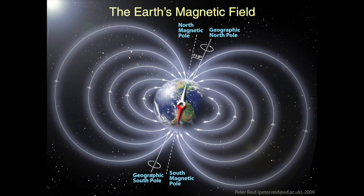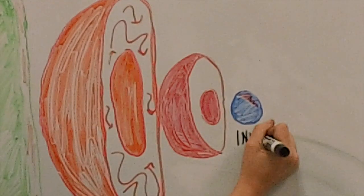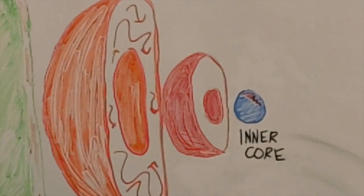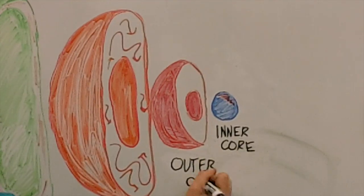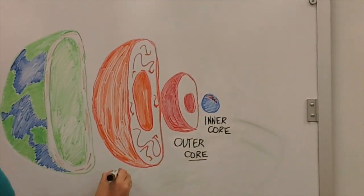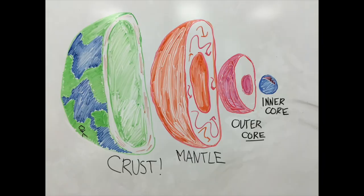If an electric current causes a magnetic field, what causes Earth's magnetic field? Let's start by looking inside of Earth. We see the inner core, outer core, mantle, and crust. We want to focus on the inner and outer core that are made of iron because iron is a good conductor.